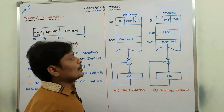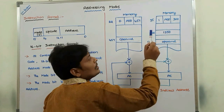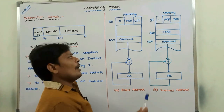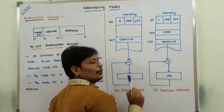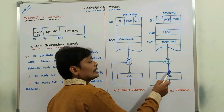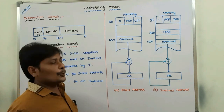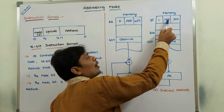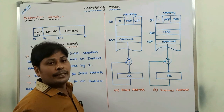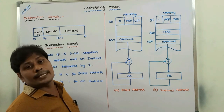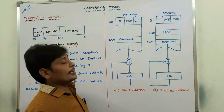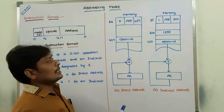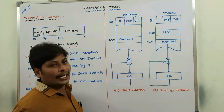Once we get the operand value, another operand is stored in the accumulator. We retrieve both operands and perform the addition operation. Whatever result we get from this addition operation is also stored in the accumulator. This is the description of indirect addressing. The indirect address instruction is stored in memory at address 35.